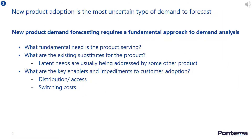The most uncertain type of demand to forecast is for new products or services. Here you need to uncover the fundamental need the product is serving, and consider whether such needs are being met by similar or substitute products. You also need to model if there are any key enablers or impediments to customer adoption — for example, in terms of access or switching costs.